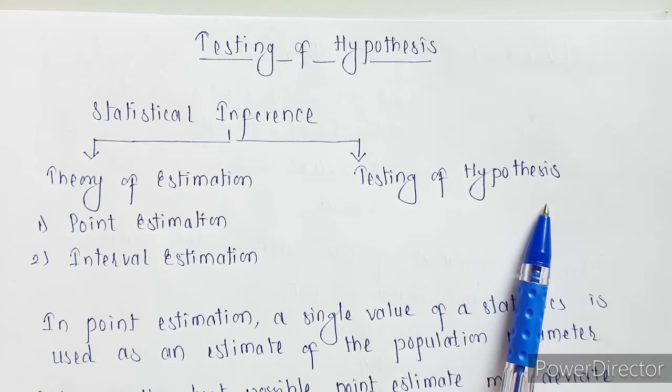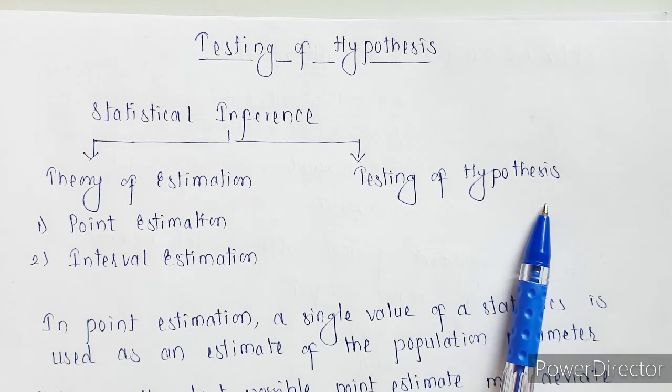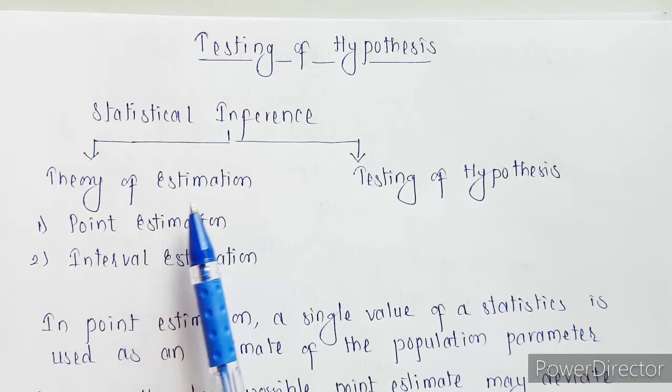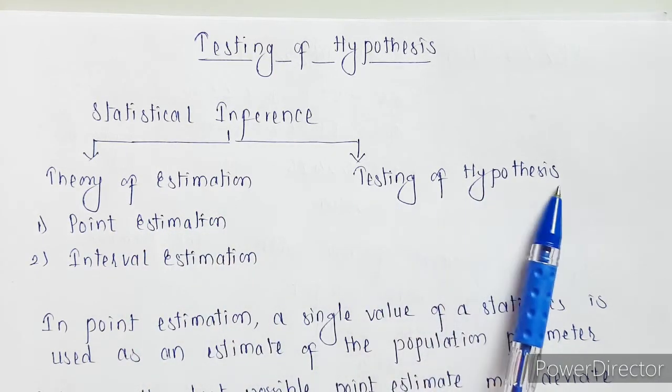So in such cases, we just have to look for statistical inference. It is another branch of statistics wherein we just check to what extent the generalized result is correct. So here we have two branches: one is theory of estimation and another is testing of hypothesis.